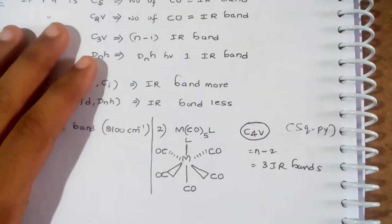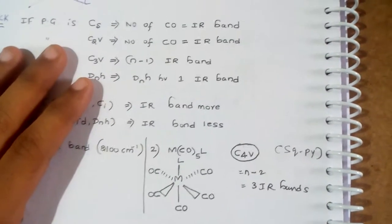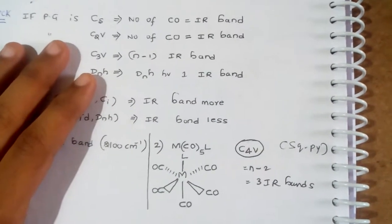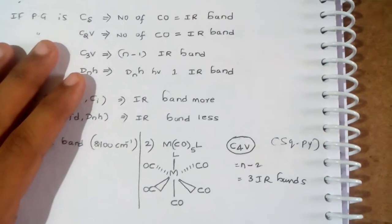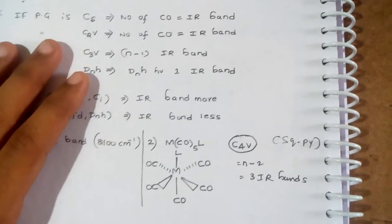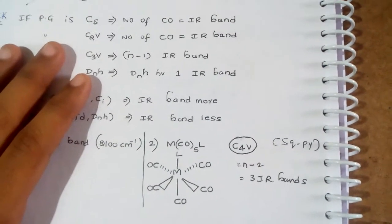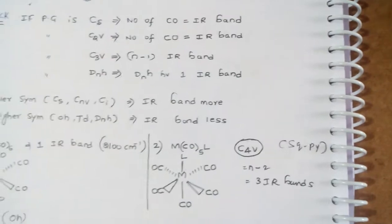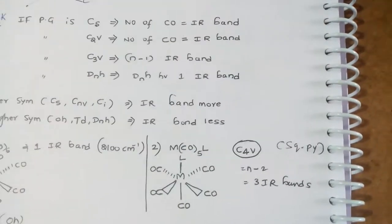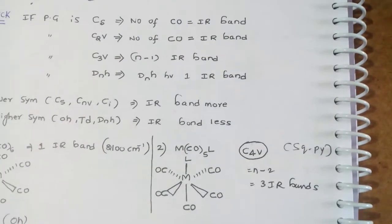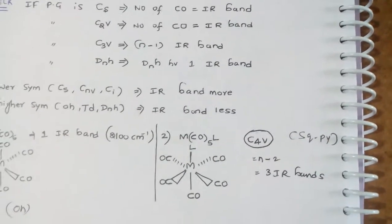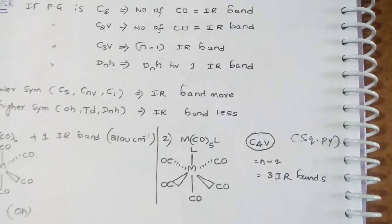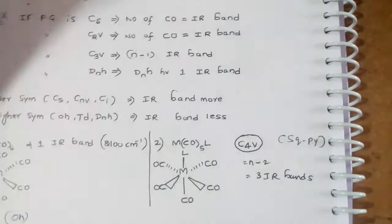For MCO5L, its point group is C4V. It's a square pyramidal complex. For C4V, it's N-2. Five carbonyl groups are there. Five minus 2 means three IR bands are there.